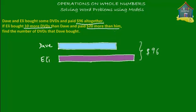Ellie spent $20 more than Dave. If we mark dotted lines, the purple bar from here until the dotted line is the same as Dave's blue bar. Then this part of the purple bar from the dotted line until the end is equal to $20. This $20 is for 10 DVDs, because she bought 10 more DVDs than Dave. So this is $20 for 10 DVDs.